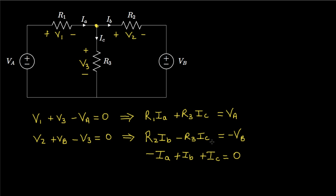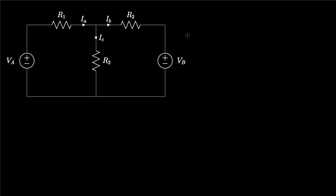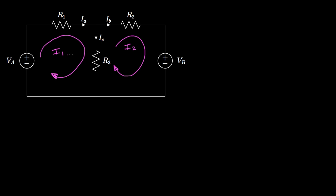It turns out we can solve for these three currents with only two equations. The key involves defining what we call mesh currents. For this circuit we define two mesh currents: I1 around the first loop and I2 around the second loop, both in the clockwise direction. That is a personal preference, but if you prefer a different direction that is fine — just apply the voltage-drop rules carefully.